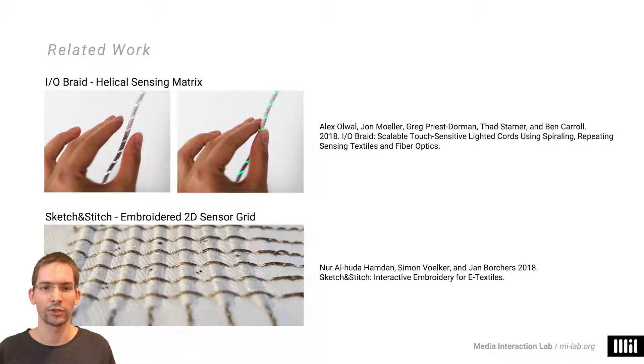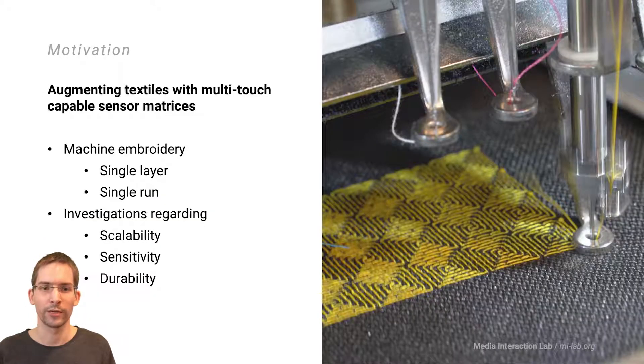In the paper sketch and stitch a multi-layer approach is detailed for fabricating two-dimensional sensor grids. As bare conductive yarns are used for traces, insulating layers are required at electrode intersection points to prevent shorts. The primary goal of our work is the augmentation of textiles with sensor grids that use mutual capacitance sensing to achieve multi-touch detection capabilities and higher robustness to electromagnetic noise.